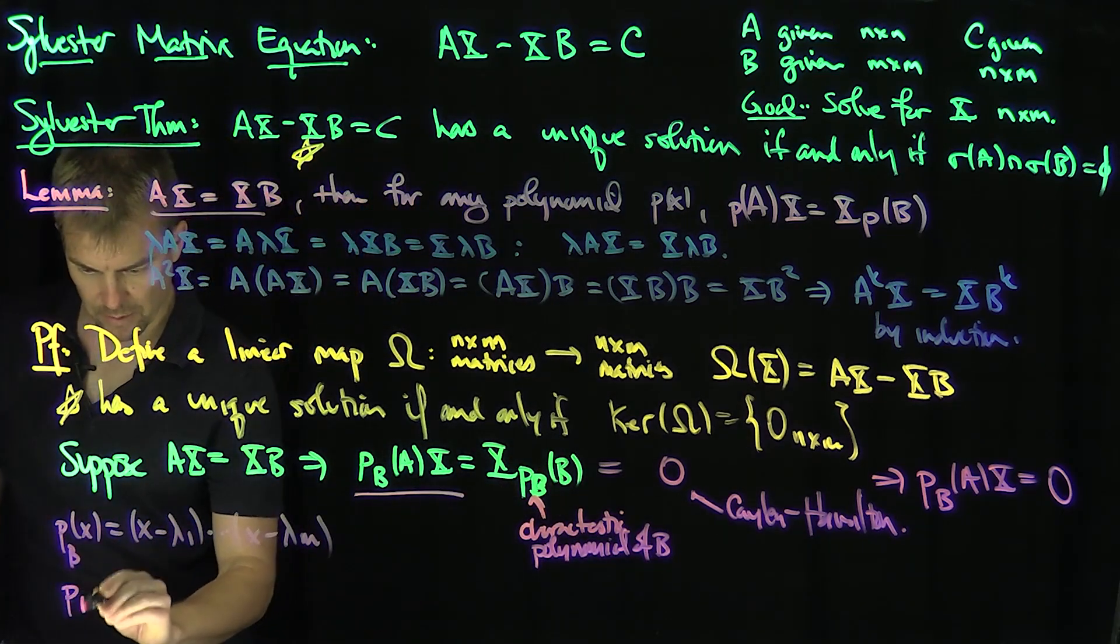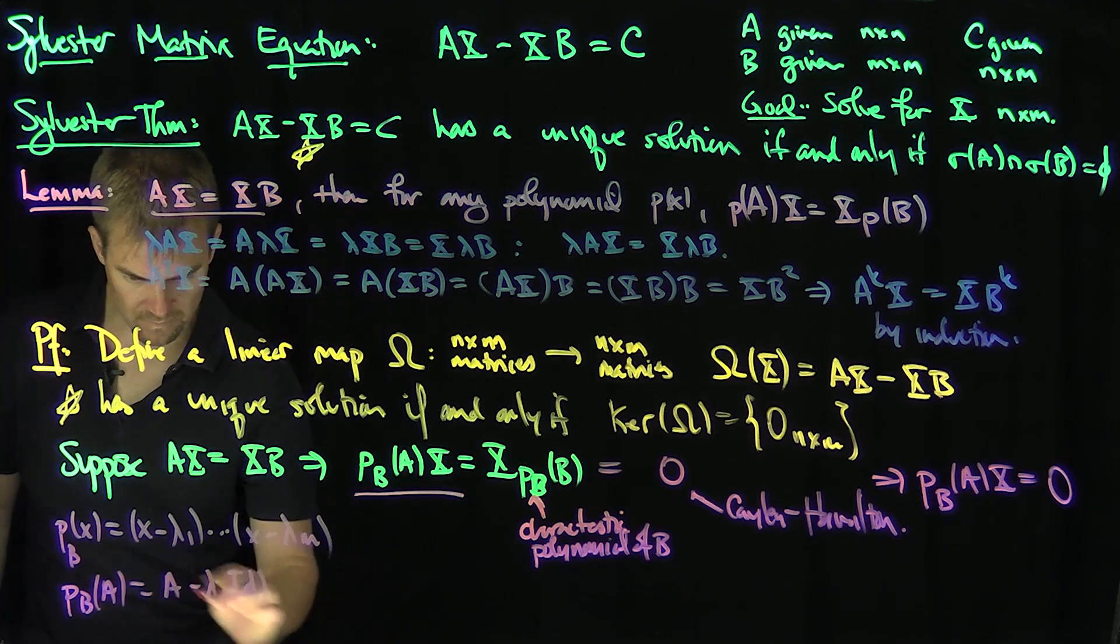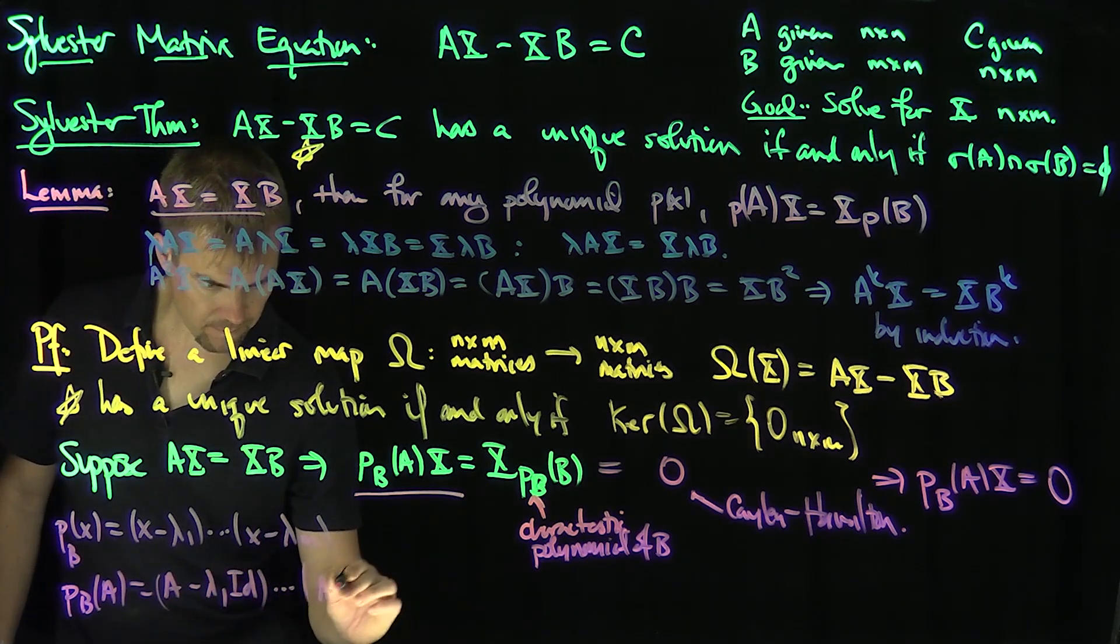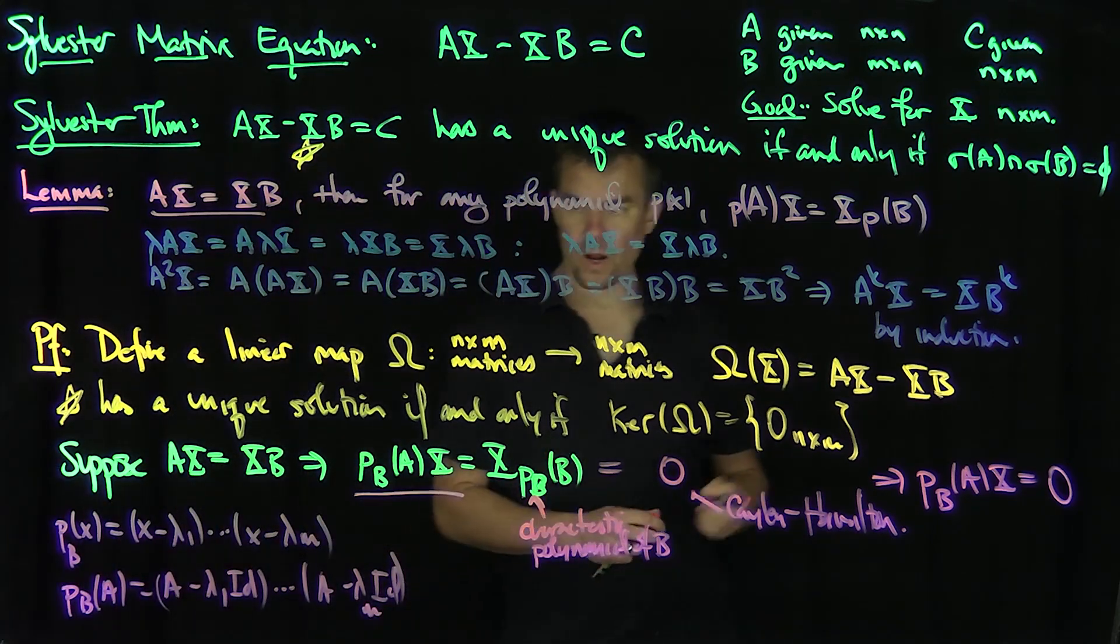So what's p_B of A going to be? p_B(A) is going to be A minus lambda 1 identity through A minus lambda m identity.